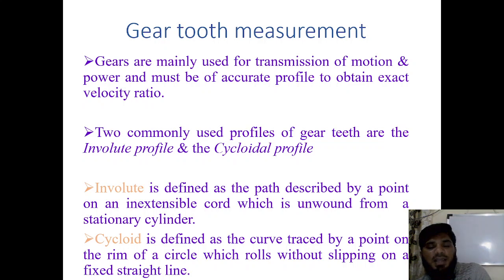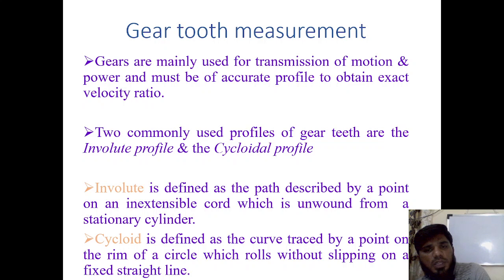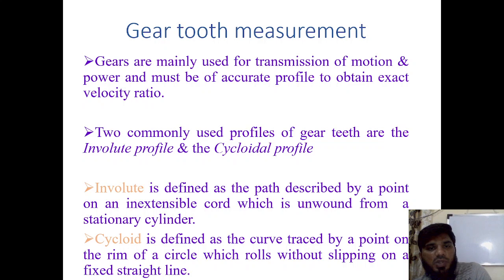The profile is used to obtain an exact velocity ratio — that is the ratio of a small gear measured with a big gear. For example, if you have a gear with high power transmission and you want to reduce the speed, you attach it with a larger gear. If the gear becomes larger, the velocity will be reduced. We must have an accurate profile to obtain the exact velocity ratio. There are mostly two common profiles: the involute profile and the cycloid profile.